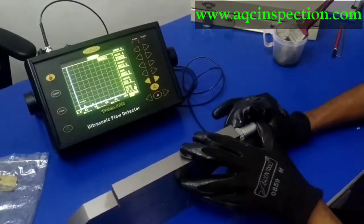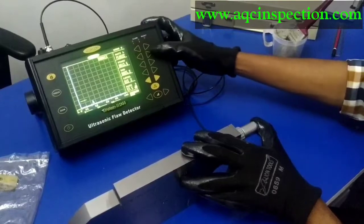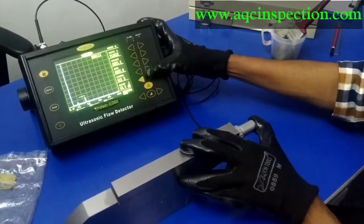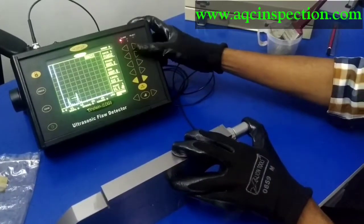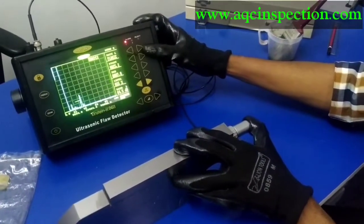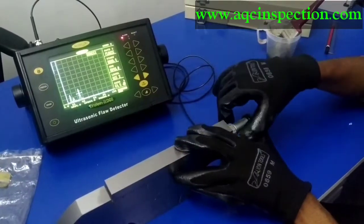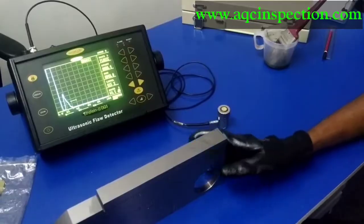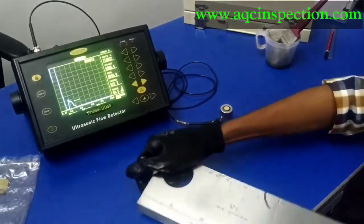Yes, I am getting it. Remove the gate. Also increase the gain value. I am getting 34.8 mm. This is how you set for the sensitivity calibration.